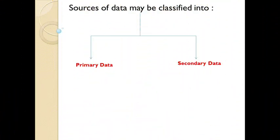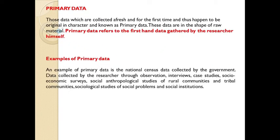Sources of data are broadly classified into primary data and secondary data. Primary data is data which is collected afresh and for the first time. It is original in character, collected first-hand, and is in the shape of raw material. It refers to first-hand data gathered by the researcher himself — this is the most important point.